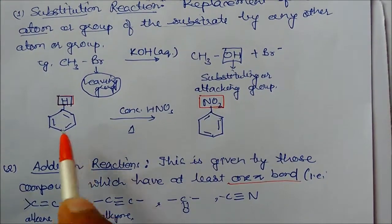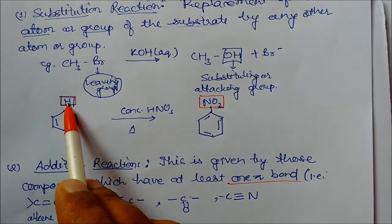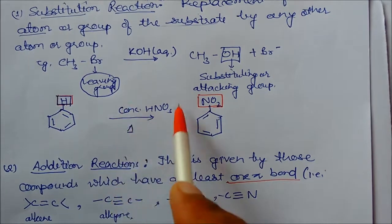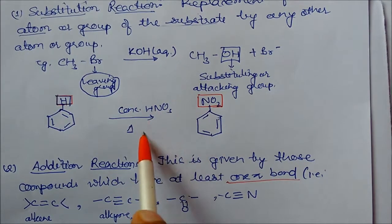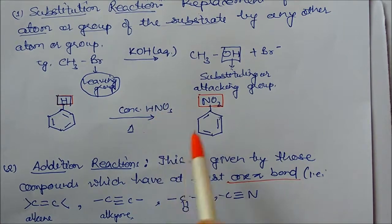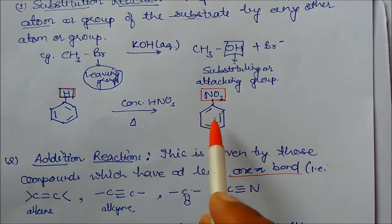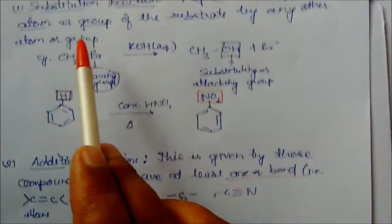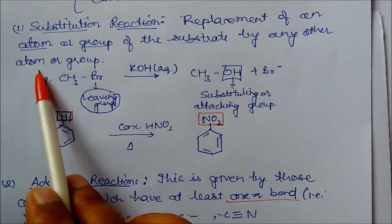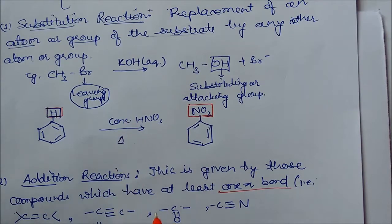One more example: benzene, in which one hydrogen is connected with carbon. In the presence of concentrated nitric acid, on heating, this hydrogen is replaced by a nitrate group. So it is substituted. This is called a substitution reaction — one atom or group of the substrate is substituted by any other atom or group.